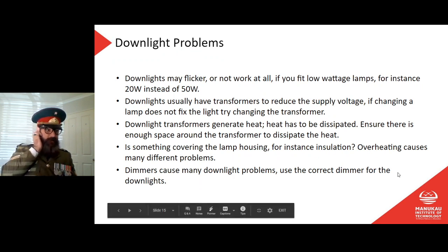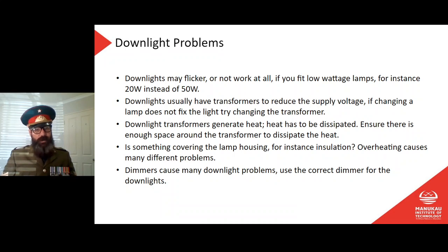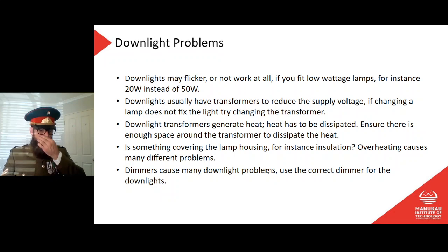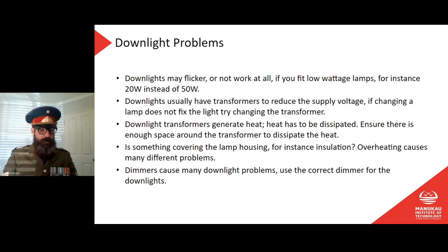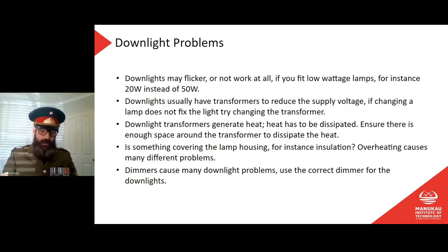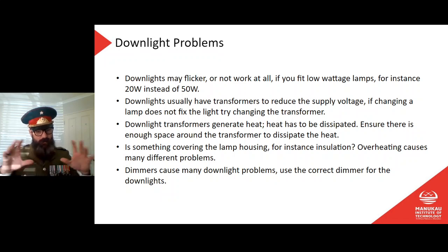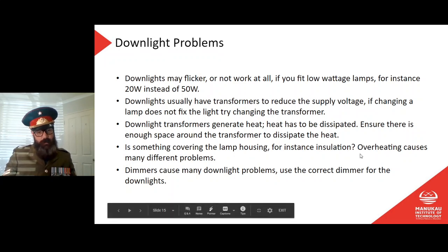Downlight problems: down lights may flicker or not work at all if you fit low-wattage lamps, for instance 20W instead of 50W. Down lights usually have transformers to reduce supply voltage — if changing the lamp doesn't fix it, try changing the transformer. Downlight transformers generate heat; ensure there's enough space around the transformer to dissipate it, and make sure insulation isn't covering the lamp housing. Overheating causes many different problems. Dimmers may also cause downlight issues — use the correct dimmer for the type of down lights fitted.